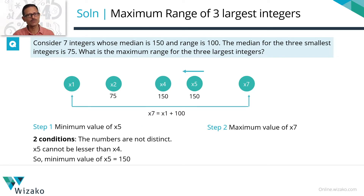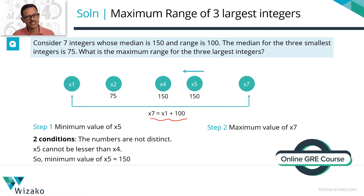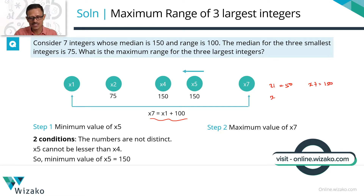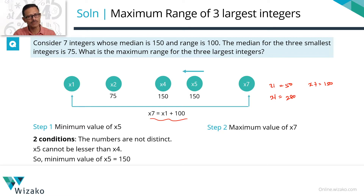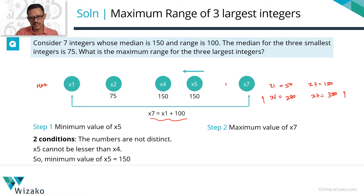Step two: maximize x7. We know x7 equals x1 plus 100. As x1 increases, x7 also increases by the same amount. So maximizing x1 maximizes x7. For example, if x1 is 50 then x7 is 150; if x1 is 280 then x7 is 380. The key is: what is the maximum possible value for x1?